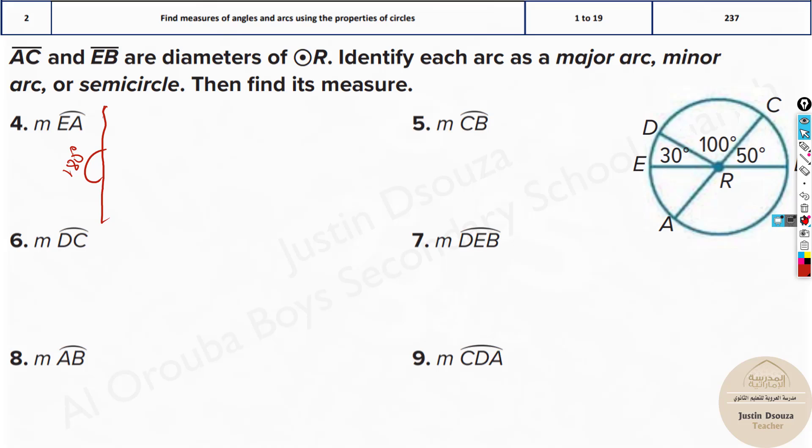Moving on to the next type of problems. Here we have been given a circle with many angles and we need to find the measure of arcs and we have to tell whether they are major or minor arc. Now EA, you can see E and A, right? This is a minor arc because it's less than 180 degrees, but here it's not just finding that, you need to even find the angle.